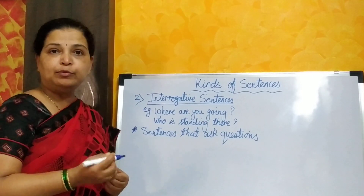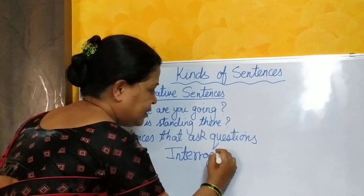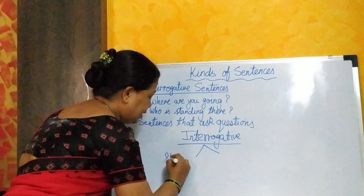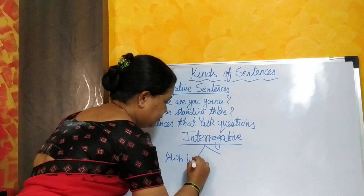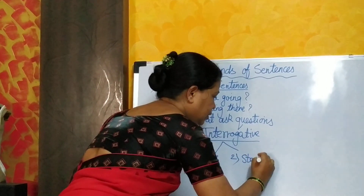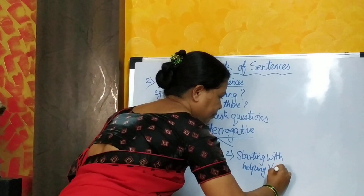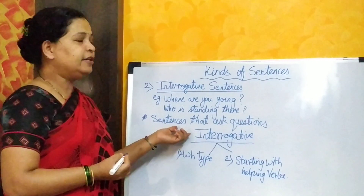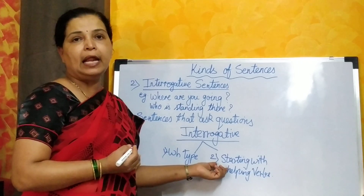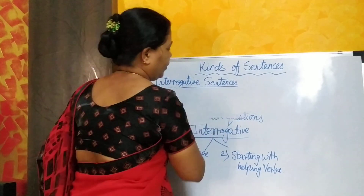Let's see the types of interrogative sentences. Interrogative sentences are of two types. First, WH type. Second, starting with helping verbs. Let's see the first one — WH type — and take some examples so that you will understand.